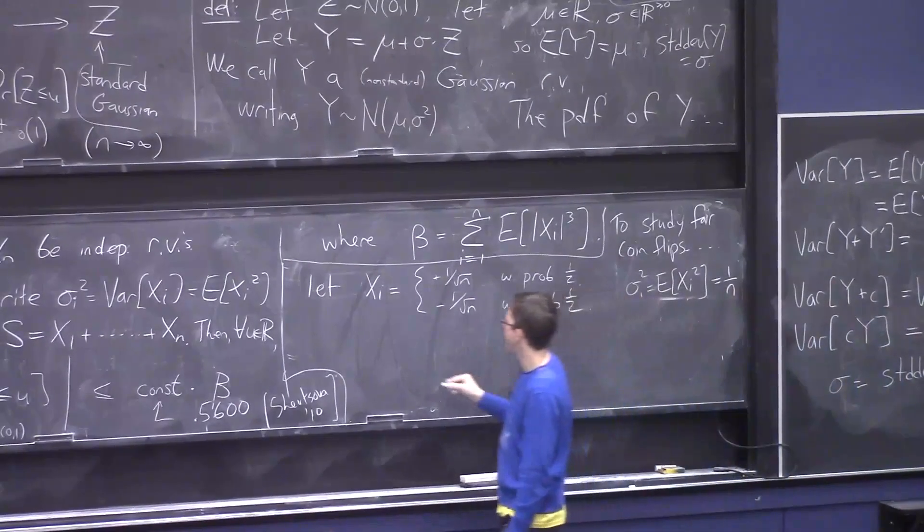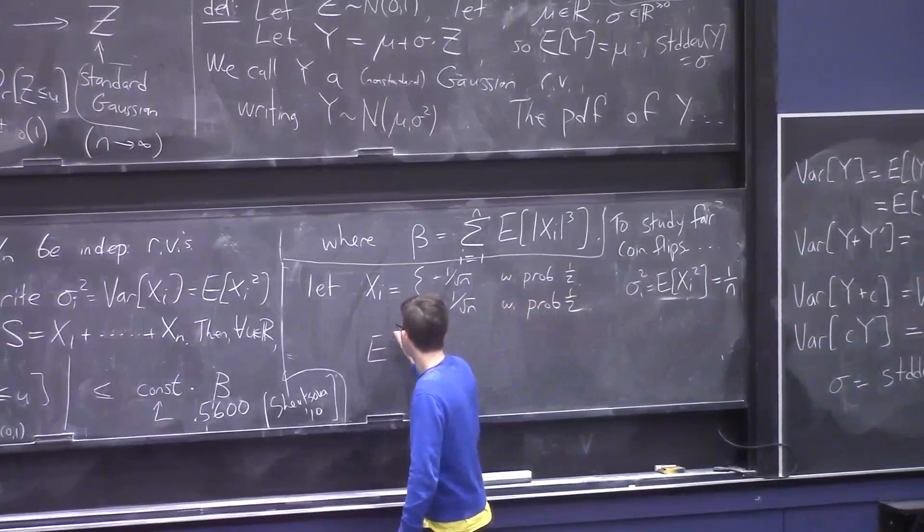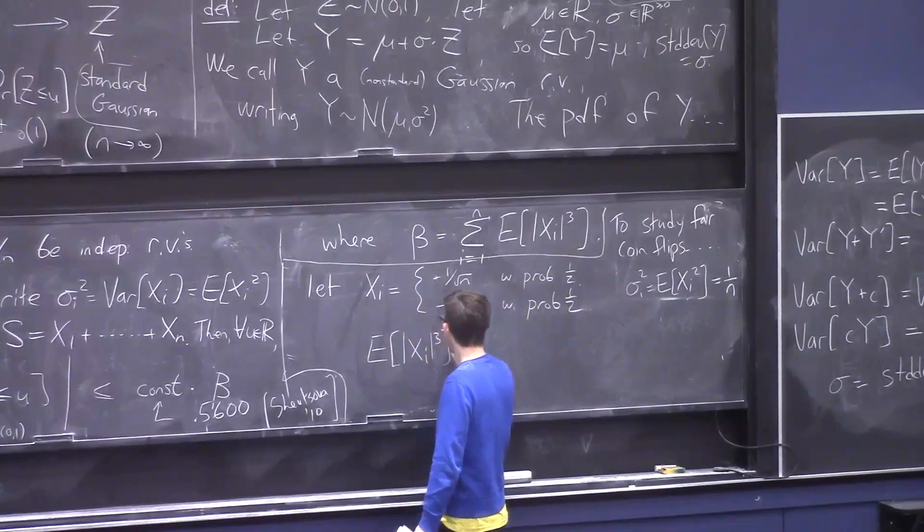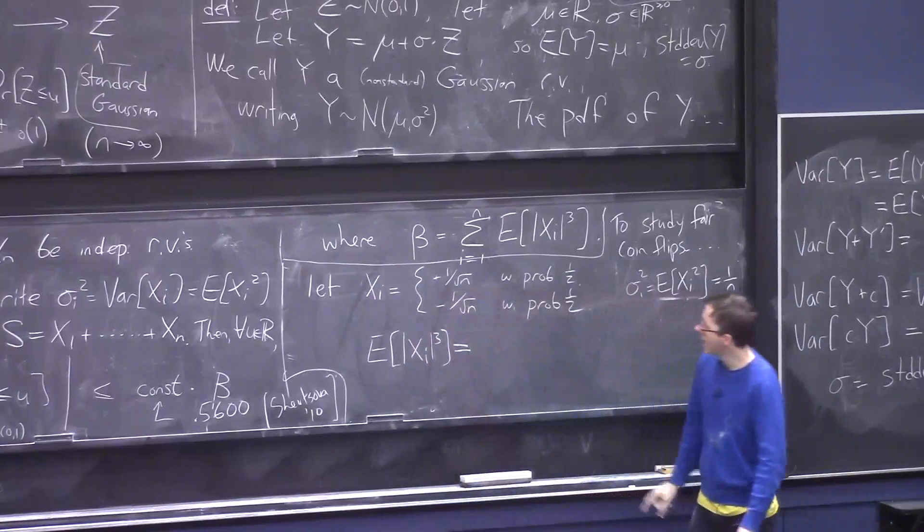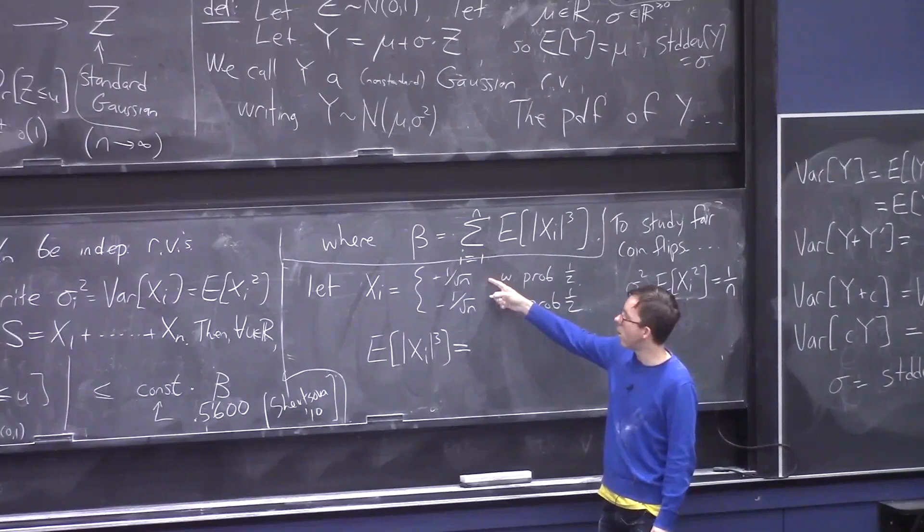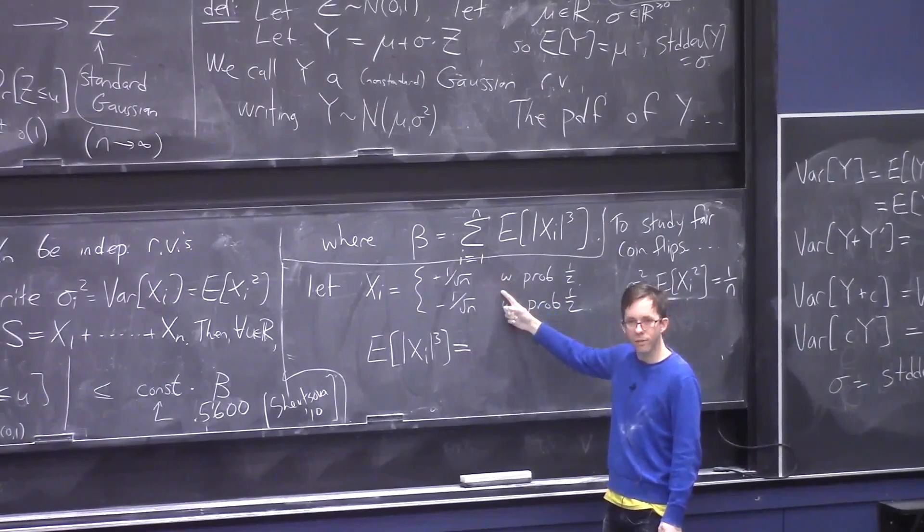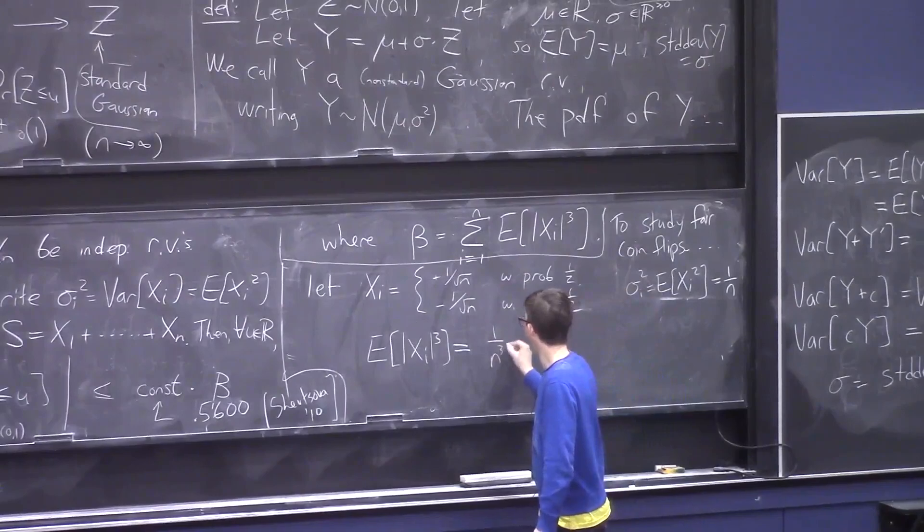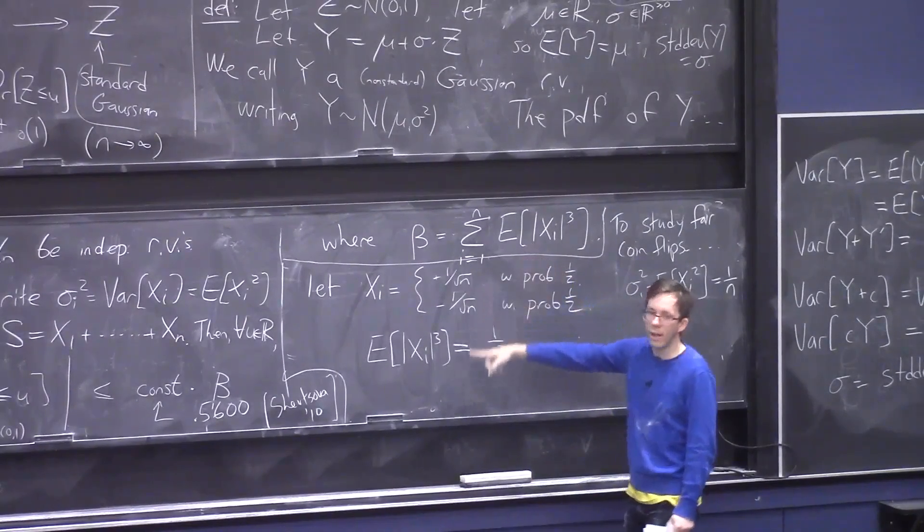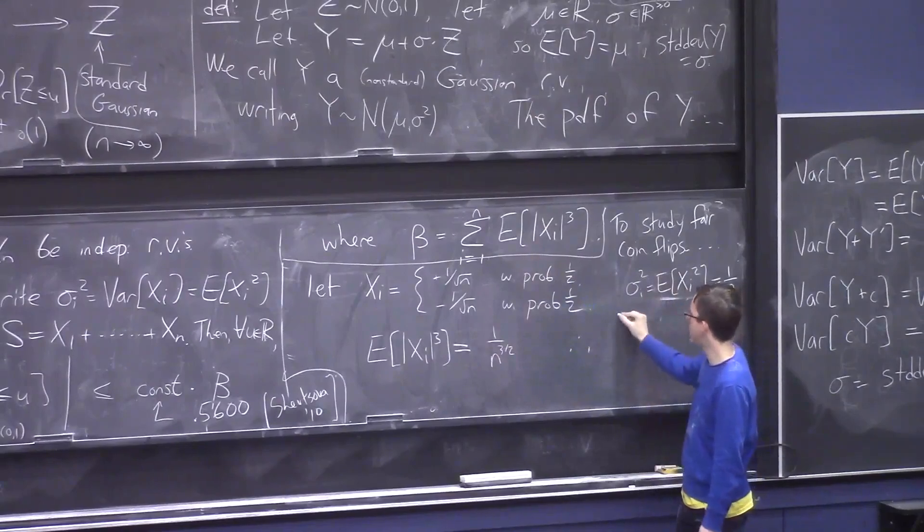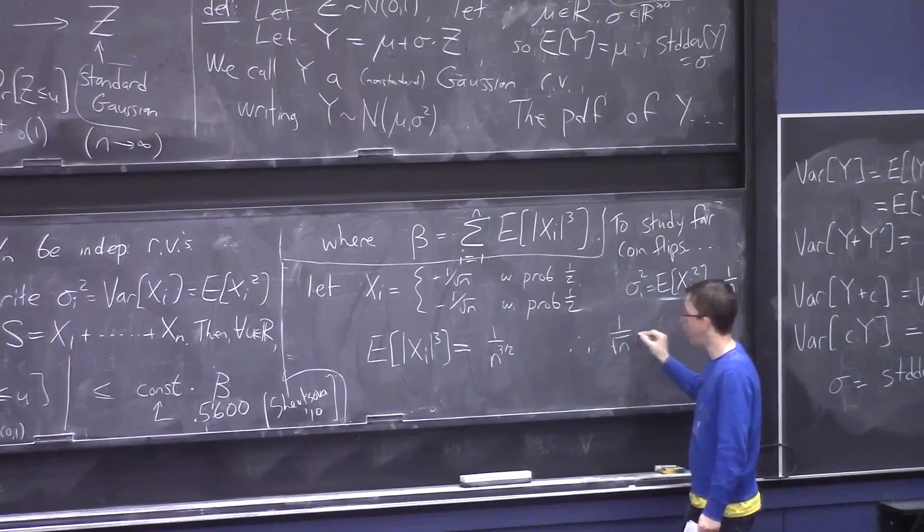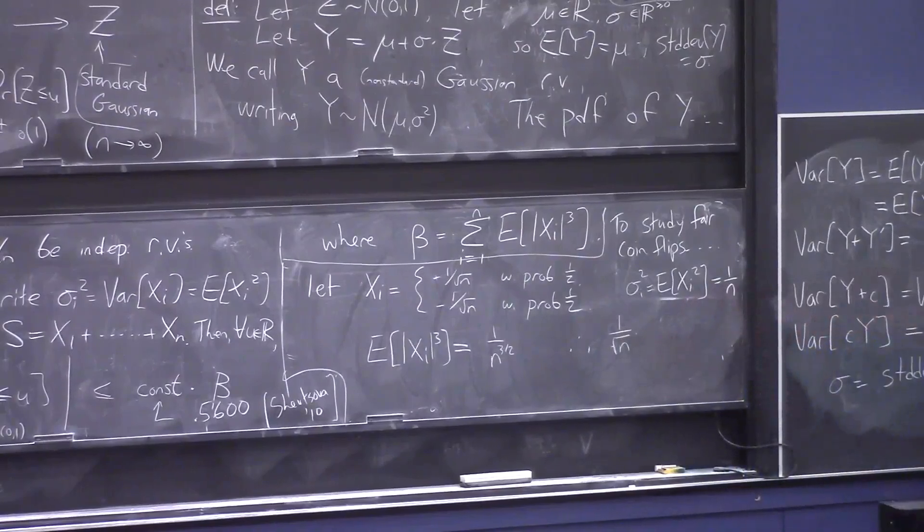And, great, so now, what is this thing, expected value of absolute value of Xᵢ cubed? Well, absolute value of Xᵢ cubed is, Xᵢ cubed absolute value is always 1 over n to the three halves. So, therefore, β, which is the sum of this overall n random variables, is 1 over root n. Okay, which is small, as I promised.